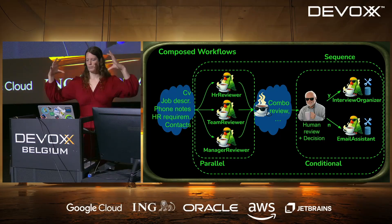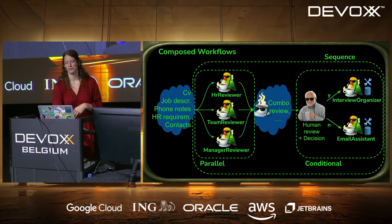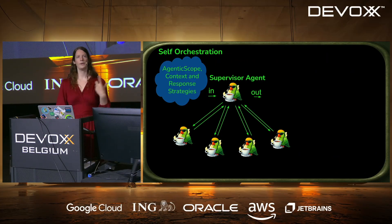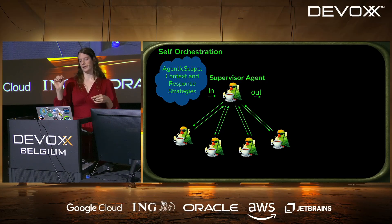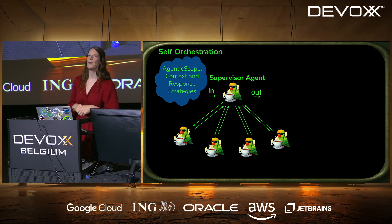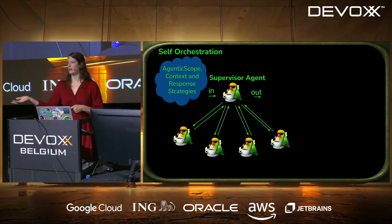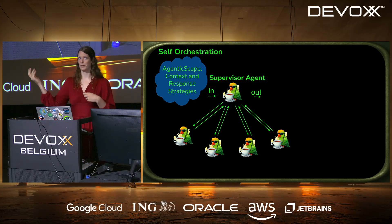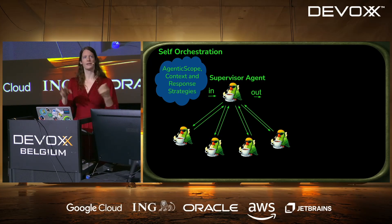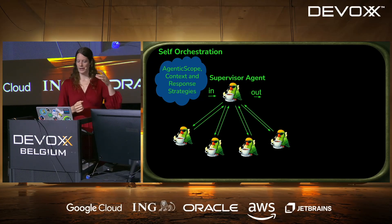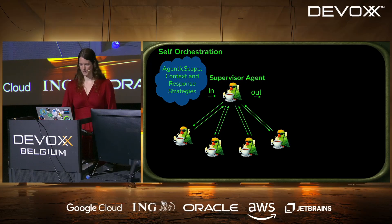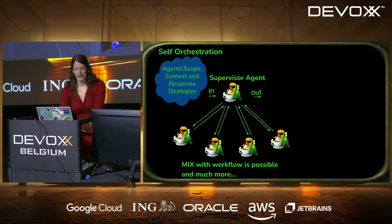The other pattern is the supervisor agent, where the agent itself chooses when to call which sub-agent. This works well when your process is not well-defined — for example, a travel planner where weather, preferences, or cancellations could change the whole flow. You have a bit less control but also less programming work.